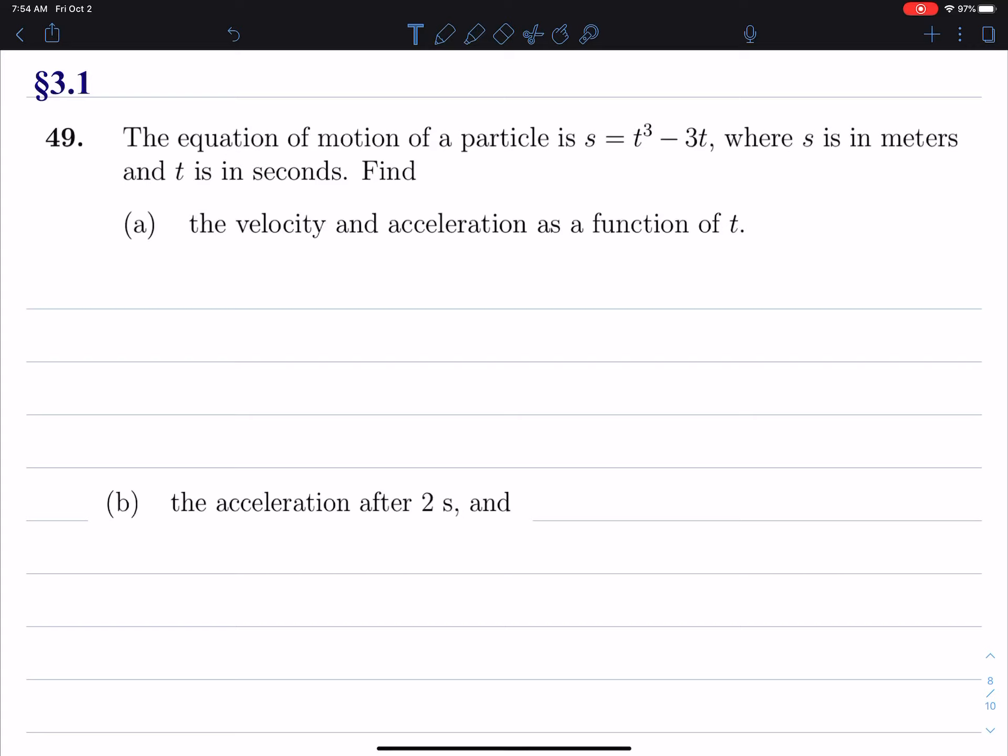We're going to find the velocity and the acceleration as a function of T. Well, the velocity equals the derivative of the position function. So V of T is equal to S prime of T and we look above of what S is and I can maybe highlight that. All right, that's S.